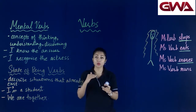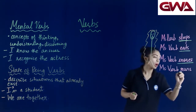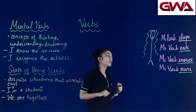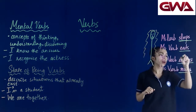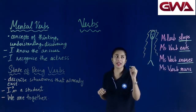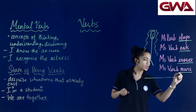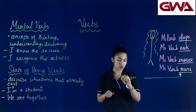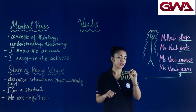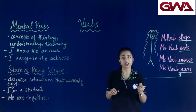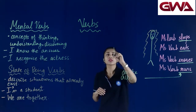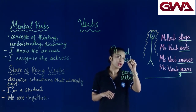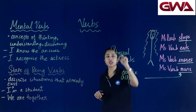And the last example: Miss Verb runs. This is also an action — it denotes action. So all four of them denote action, and these are physical verbs. This is our first type of verb: physical verbs.